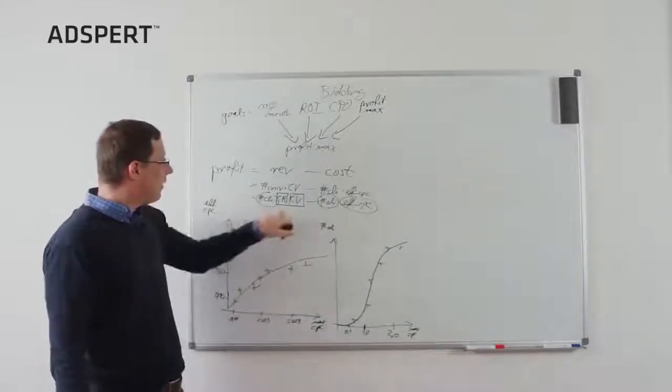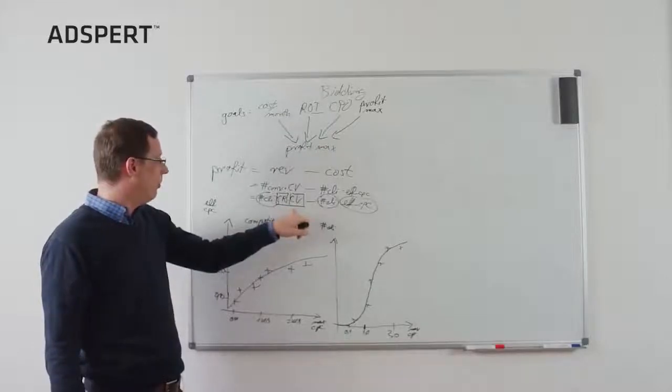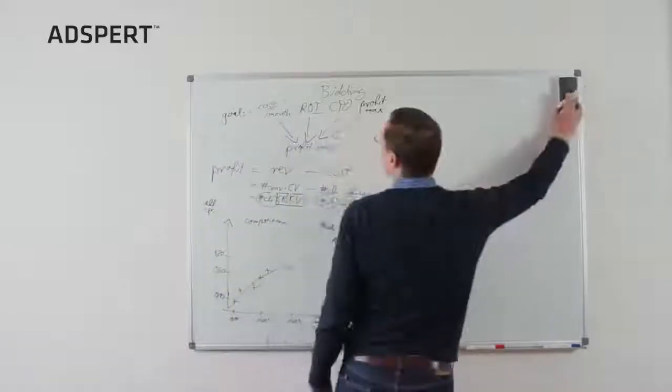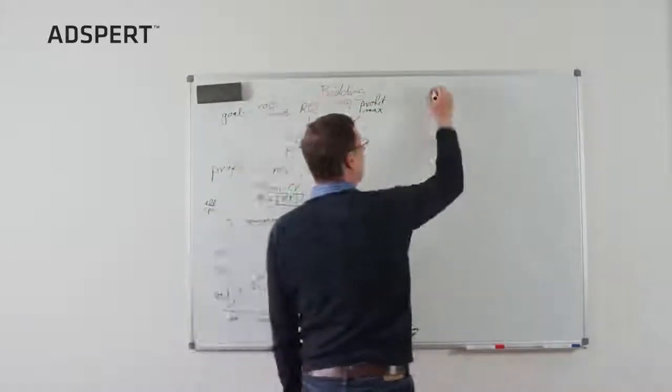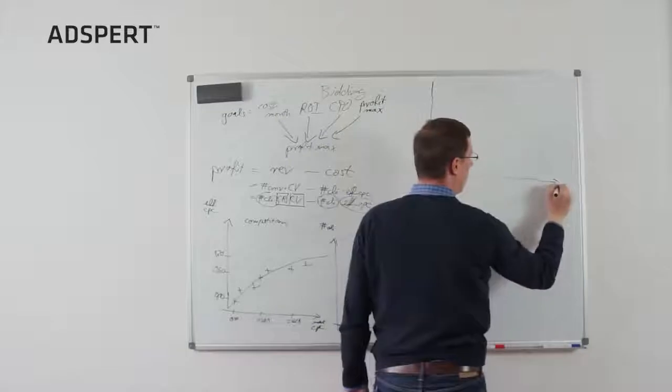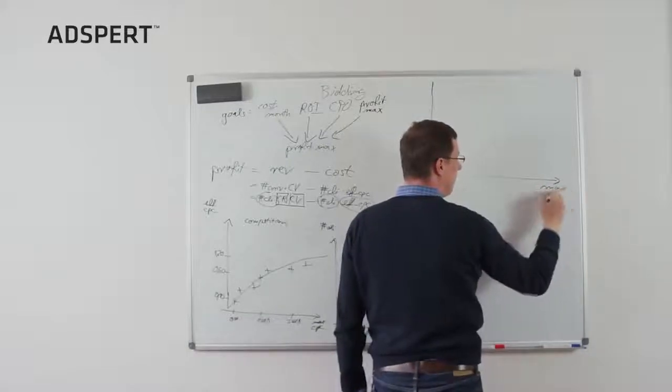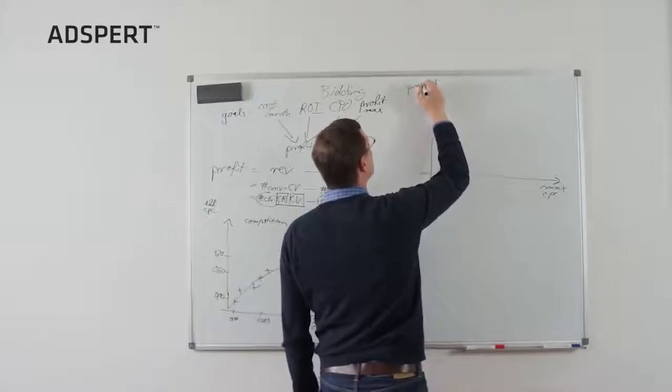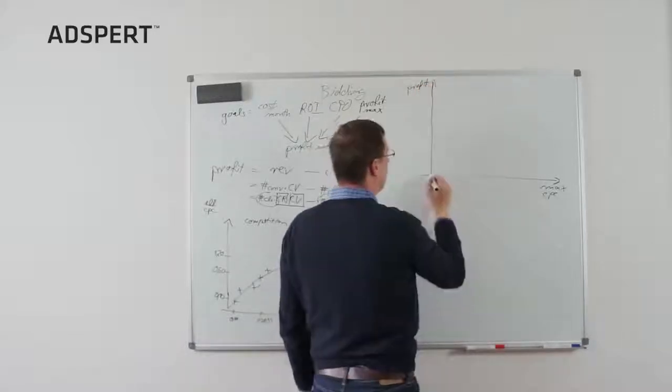Okay. So, let's assume we have estimated these values too. Then, we have everything we need to calculate the profit. Usually, it looks like this. Again, a max CPC bid. The profit roughly looks like this.